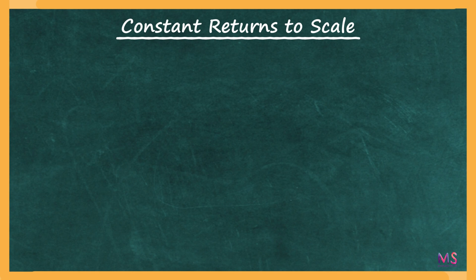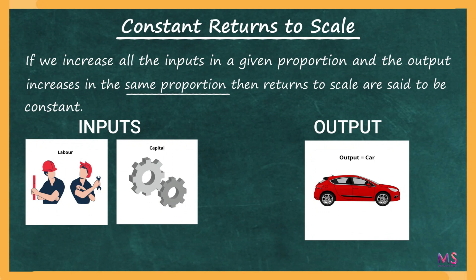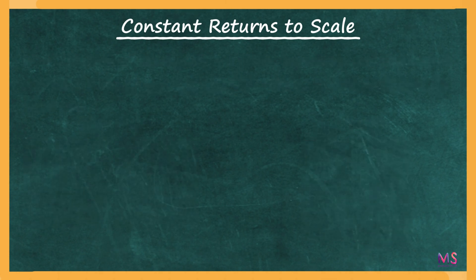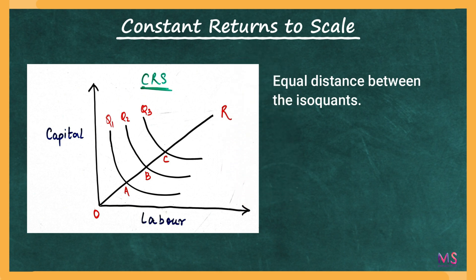If we increase all inputs in a given proportion and output increases in the same proportion, then returns to scale are said to be constant. In our car example, if inputs are increased by 2X proportion and car production also increases by the same proportion — 2X — then returns to scale are constant. Similarly, if inputs are tripled and outputs are also tripled, it is a case of Constant Returns to Scale. Diagrammatically, Constant Returns to Scale is shown by equal distances between the isoquants: the distance between Q1 and Q2, and between Q2 and Q3, are equal.